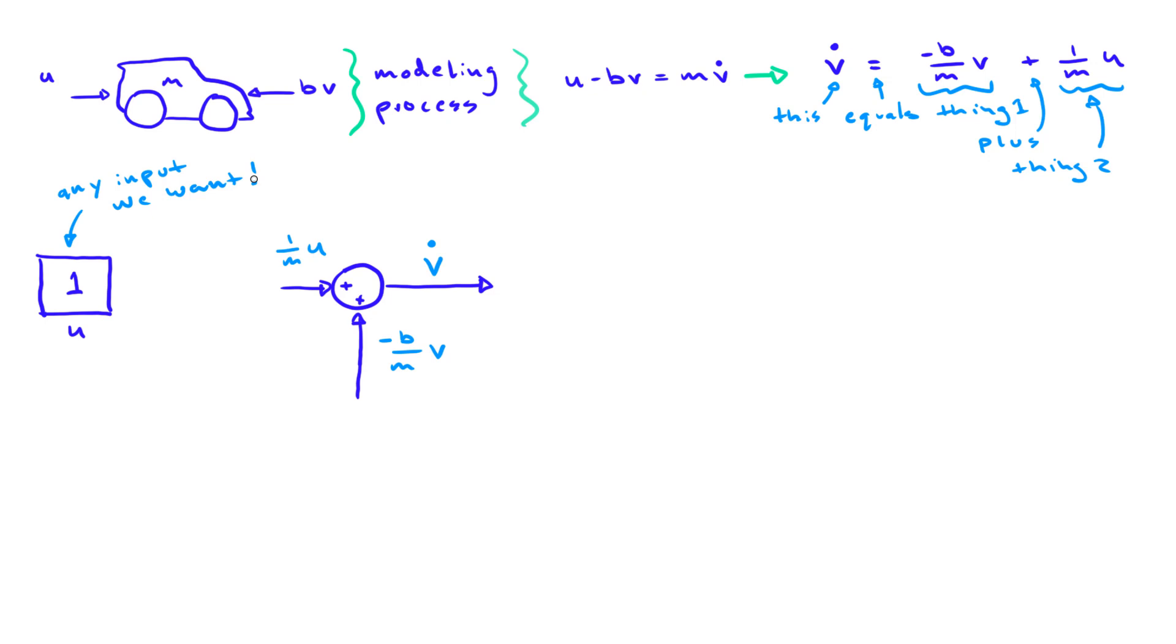Then to construct the full u times 1 over m signal, we need to multiply u by 1 over m. Knowing that 1 over m is a constant value, we can use a gain block to do inline multiplication. Now this signal does in fact represent 1 over m times u.